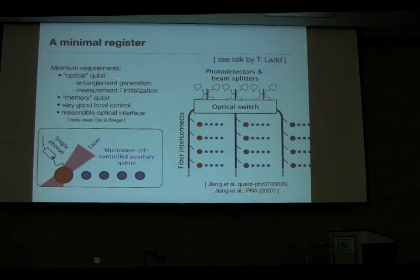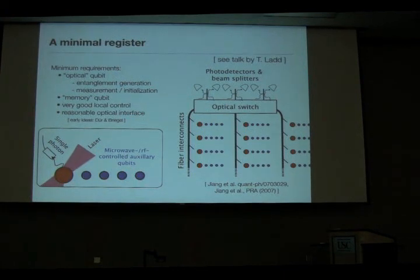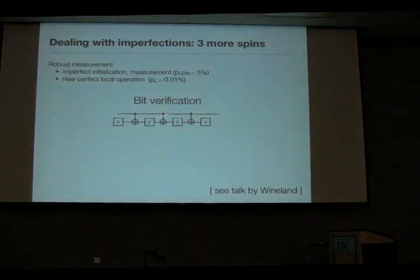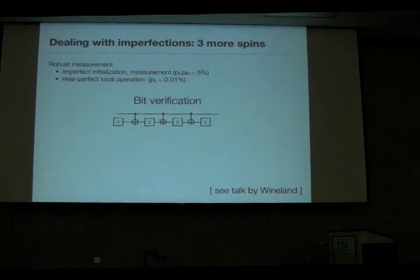That's mostly because you have this memory qubit in addition to the optical qubit. The picture is: I have this optical element which I can address through the laser and emit single photons from, then these auxiliary qubits nearby controlled with microwave or RF fields. Thus an ion computer could do this very well — a small ion device with an optical interface developed separately, plug these devices in.